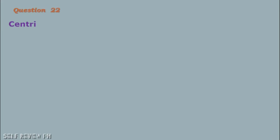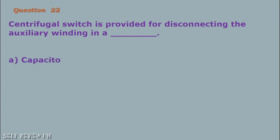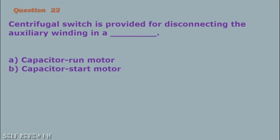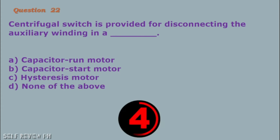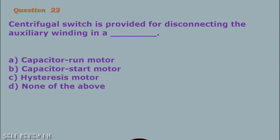Question number 22: Centrifugal switch is provided for disconnecting the auxiliary winding in a blank. A. Capacitor run motor B. Capacitor start motor C. Hysteresis motor D. None of the above. The correct answer is letter B, capacitor start motor.